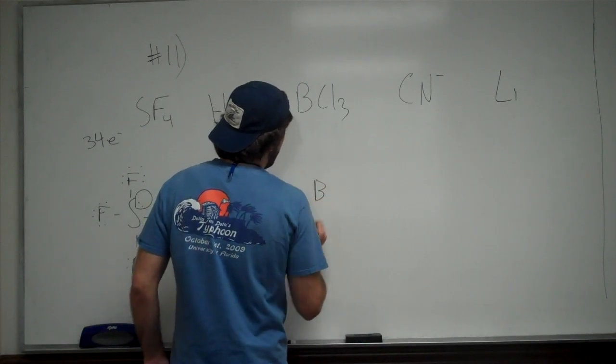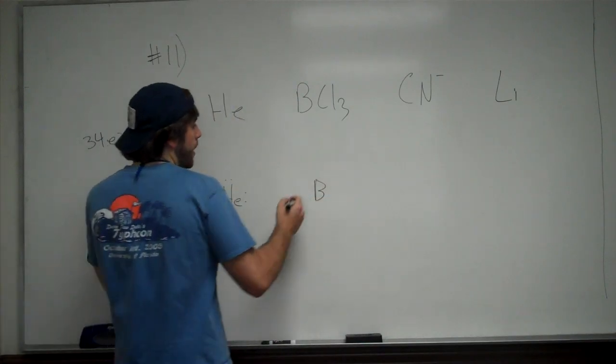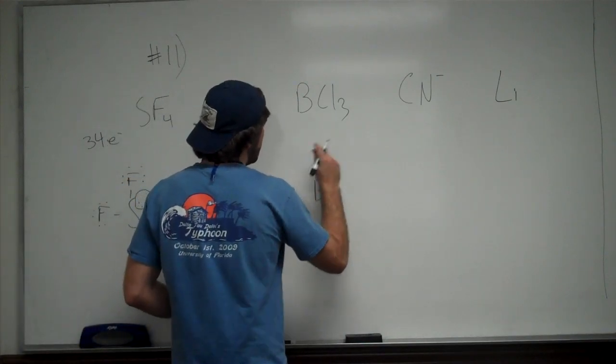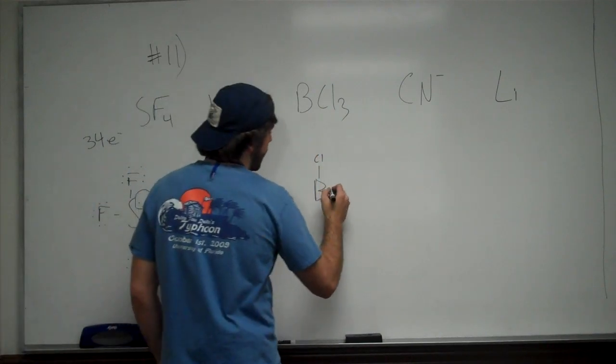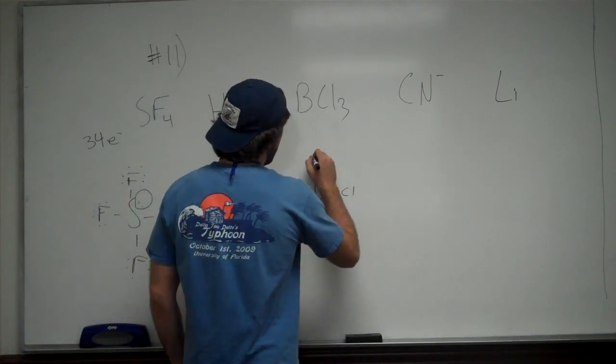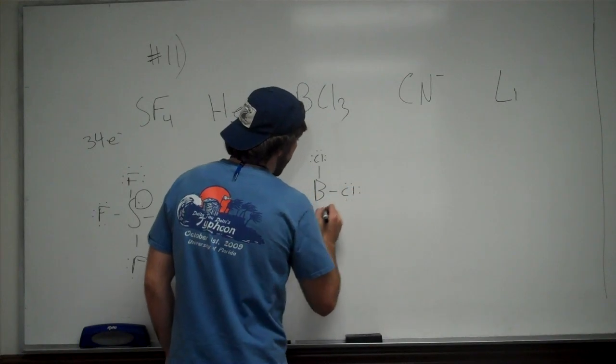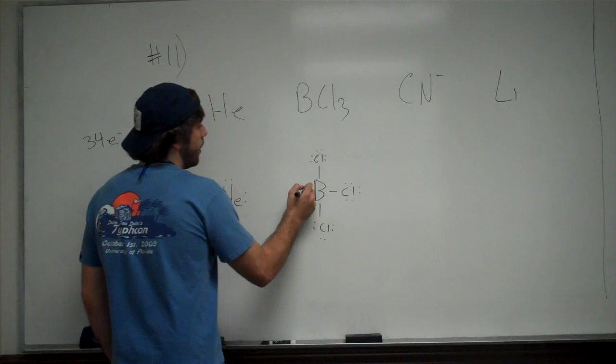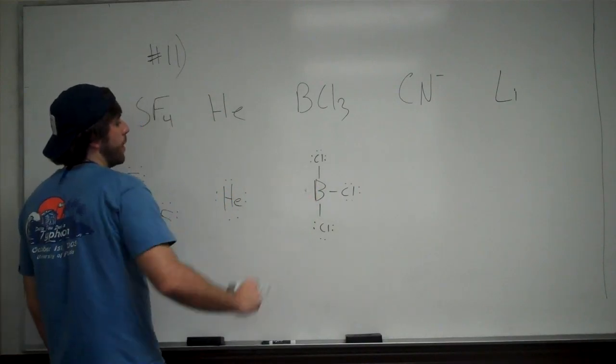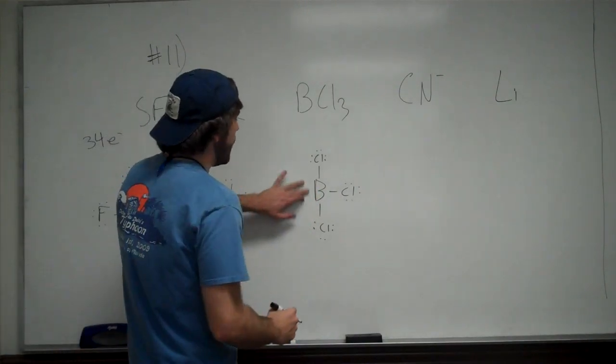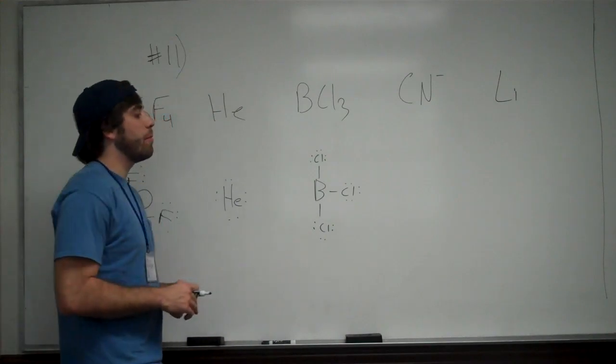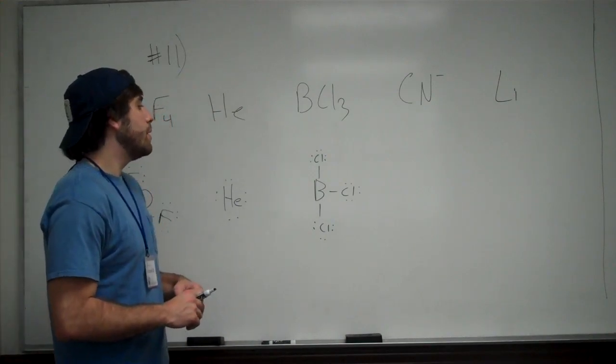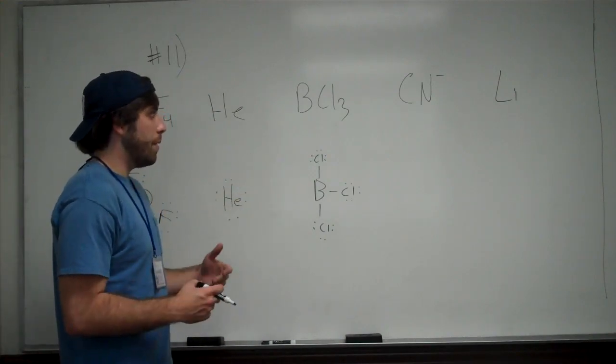BCL3, boron tetrachloride. Now, keep in mind that this species, were this not boron, were this something else, would be following the octet rule if there was a lone pair on boron. If you had a lone pair sitting right there, then it would be following the octet rule. But that's not the case. Boron has a valence of 3, so it only wants to bond with 3 things to be neutral and stable. So, BCL3 is not following the octet rule.